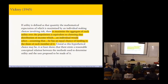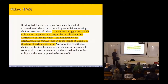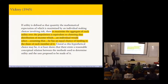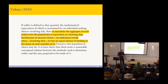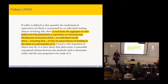He wrote: 'To maximise the aggregate of such utility in the population is equivalent to choosing the distribution of income which an individual would select, assuming that he has an equal chance of landing in the shoes of each member.' It seems that he's trying to establish a reasonable conceptual relation between operational methods used to determine utility and some normative uses. So he's not just observing a coincidence between the idea of expected utility and the idea of average utility — he's assuming that there is some kind of normative principle at work here: the idea of the veil of ignorance.